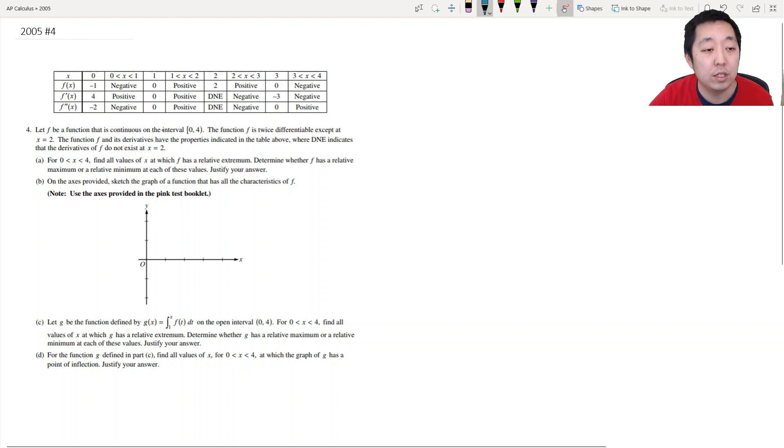Note that we've moved on to the non-calculator portion of the free response questions. So let f be a function that is continuous in the interval 0 to 4, the function is twice differentiable except at x equals 2. The function f and its derivatives have the property indicated in the table above where d and e indicates the derivatives of f do not exist at x equals 2. Between 0 and 4, find all the values of x in which f has a relative minimum. Determine whether f has a relative maximum or relative minimum at each of these values.